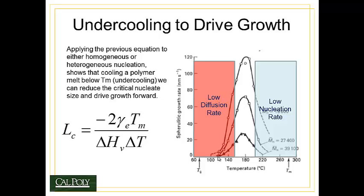As the temperature continues to decrease, I enter into a low diffusion rate area, where I have relatively low temperatures, and therefore low thermal energy applied to the polymer molecules, and they're less likely to be able to diffuse and move and form a crystal structure.